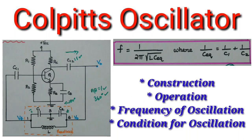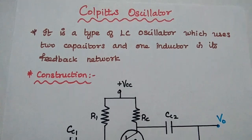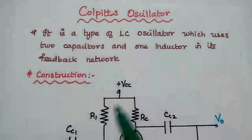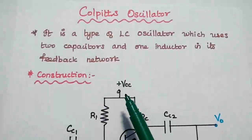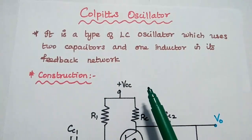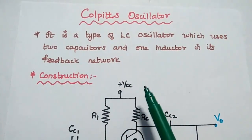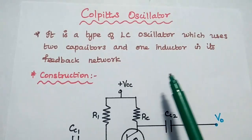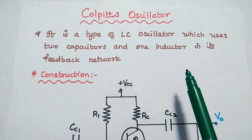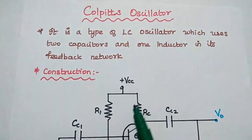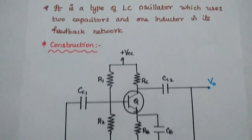Dear students, now we are going to discuss the Colpitts oscillator and its operation in detail. The Colpitts oscillator is a type of LC oscillator which uses two capacitors and one inductor in its feedback network.